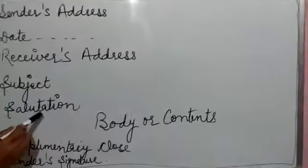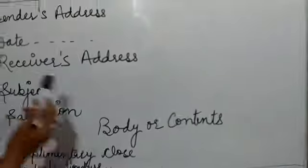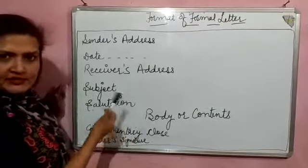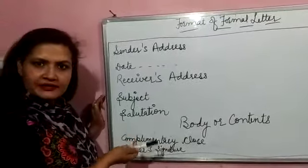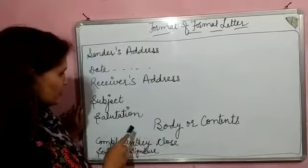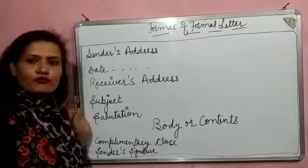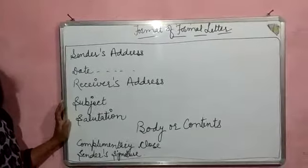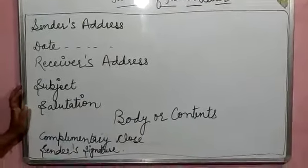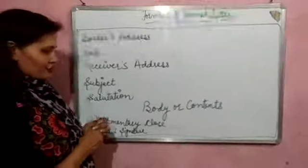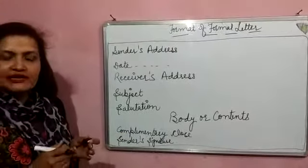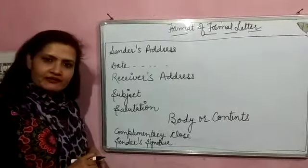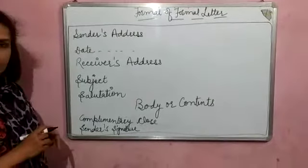Salutation means to greet someone. It varies from person to person, or letter to letter. For example, for official letters we write 'Respected Sir' or 'Respected Ma'am.' And for relatives, we write 'Dear Father,' 'Dear Mother,' 'Dear Brother,' etc.